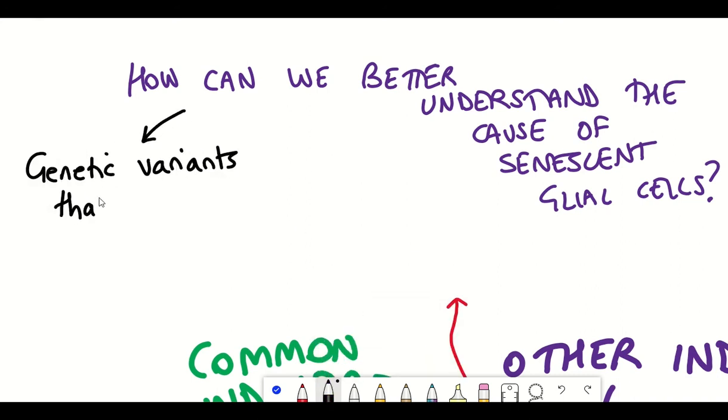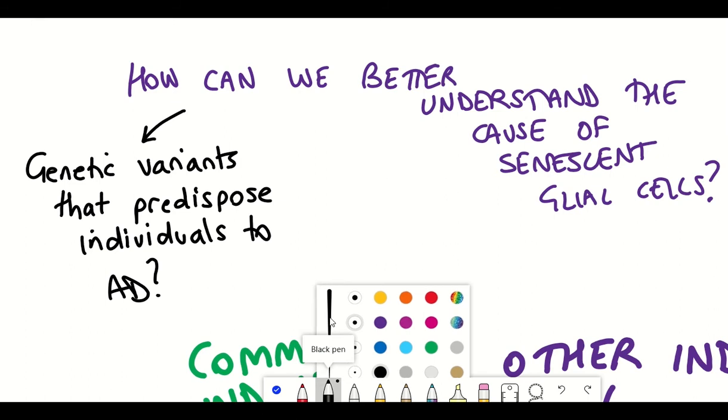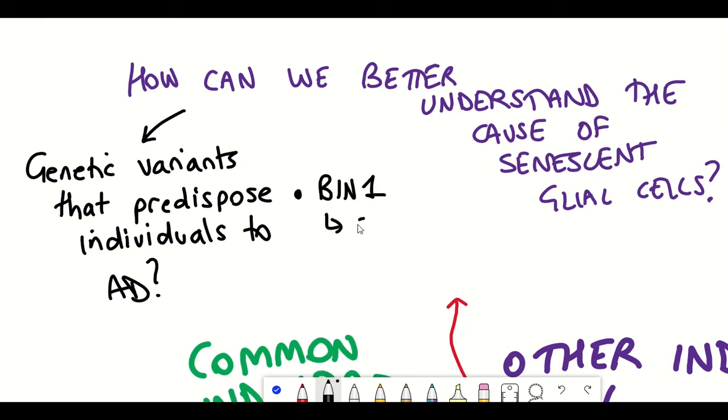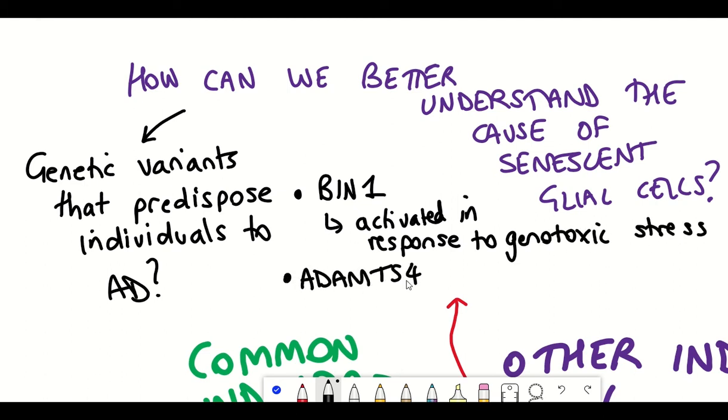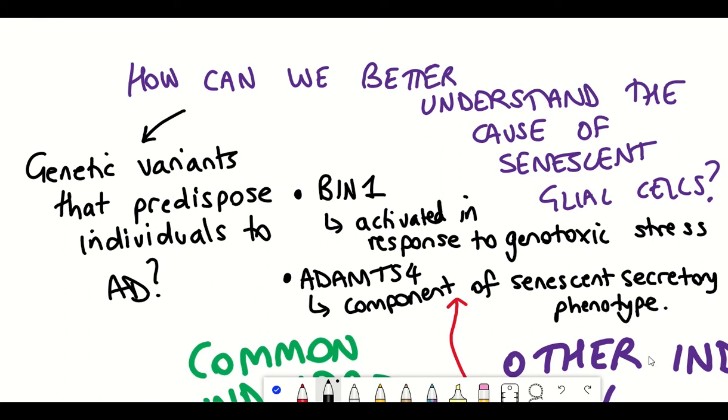Just to name two genes, one genetic variant associated with Alzheimer's disease is BIN1 and the protein encoded by this gene regulates senescence activation or apoptosis in response to genotoxic stress by regulating the stabilization of DNA. Another gene is ADAMTS4 which is a component of this secretory phenotype of senescent cells.